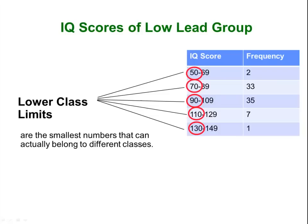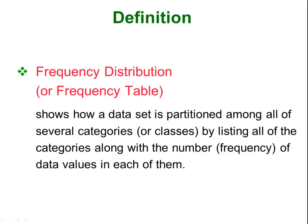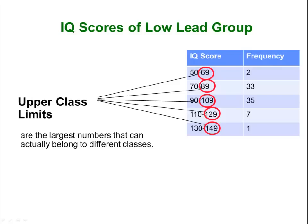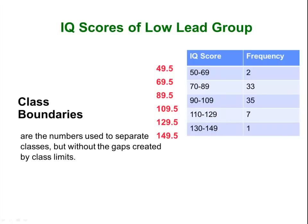The lower class limit is just the numbers on the bottom of each class, and the upper class limits are the numbers on the top of each class. You don't have to have classes — you could also do a frequency distribution listing 1, 2, 3, 4, 5 if you had a simplistic set of data with a small number of possible values. Class boundaries are the numbers used to designate when a data value gets bumped up into the next class. So if you had an IQ score of 49.5, you would round up to 50 and be placed in the 50 to 69 class, versus an IQ of 69.5, which would round up to 70 and put you in the 70 to 89 class. Those numbers become what are called the class boundaries.